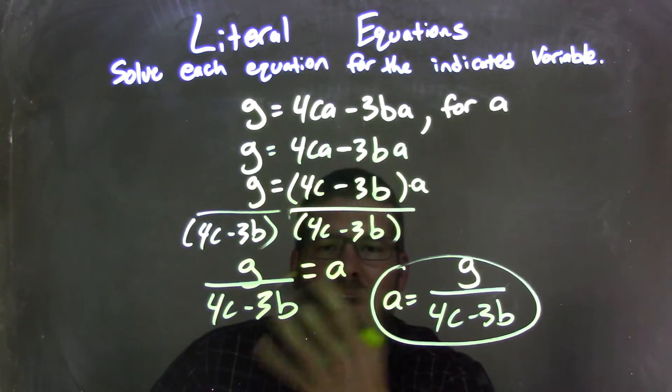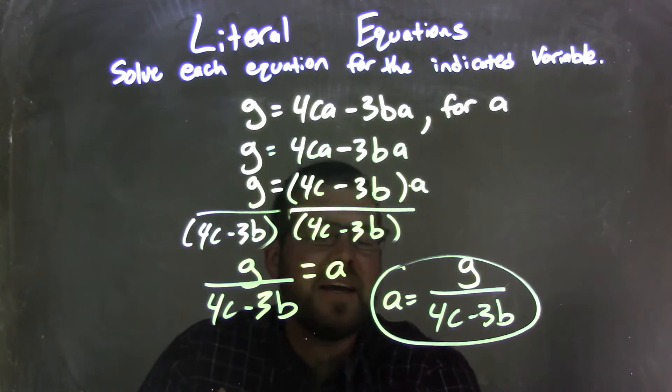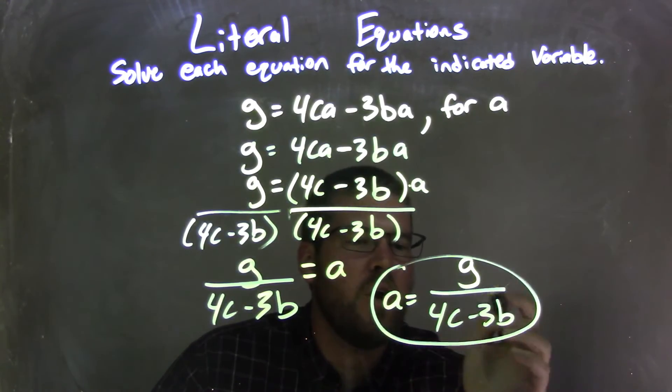Well, I can rewrite that, then, A comes first, because that looks nice and neat, and so my final answer here is A equals G over 4C minus 3B.